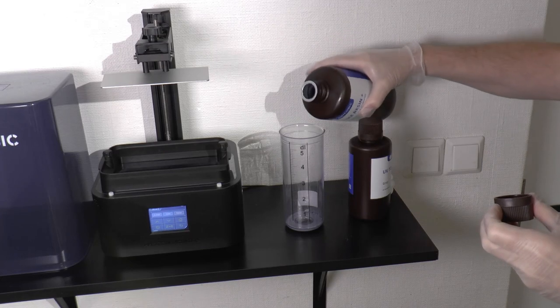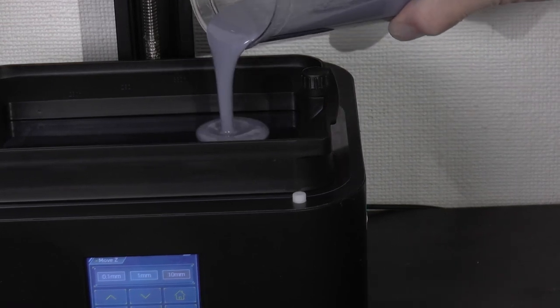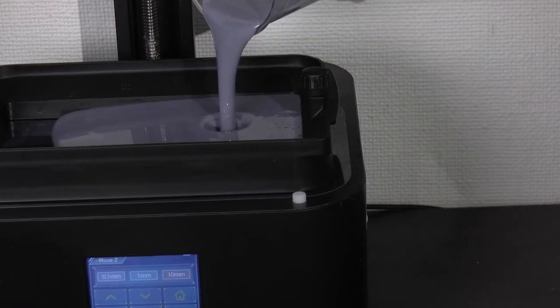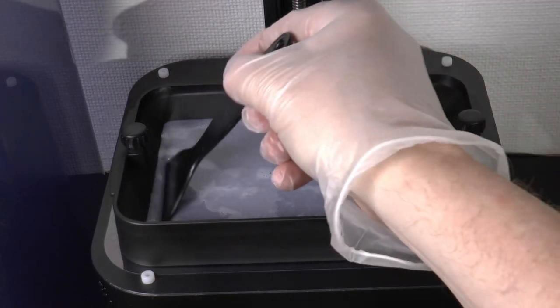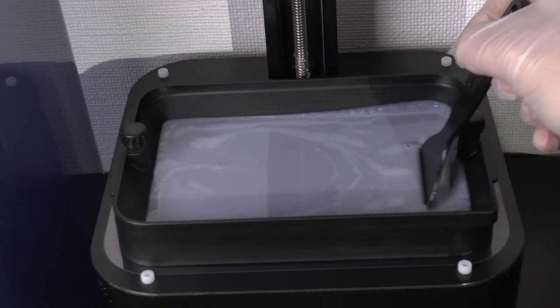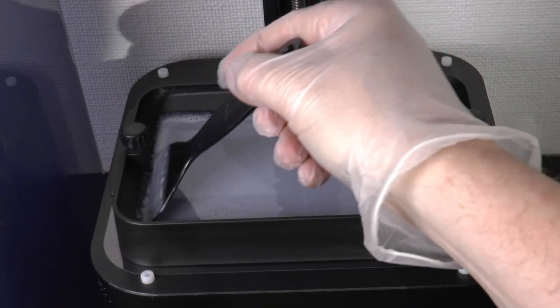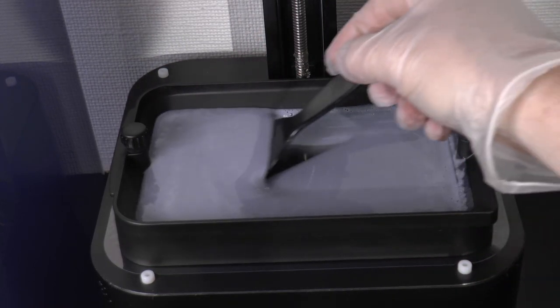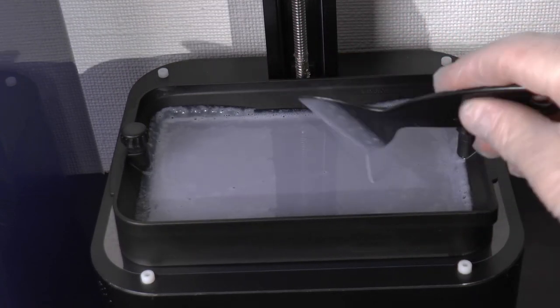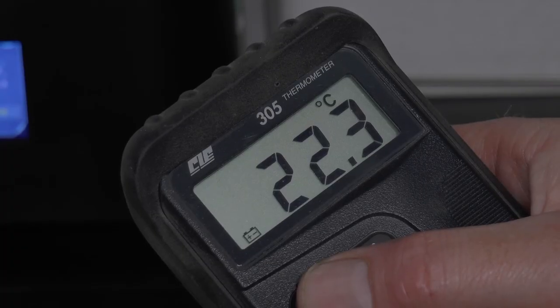For best results, it's always advisable to mix resins. And here I'm mixing 30 percent Anycubic UV Tough Resin, which is a flexible resin, with ABS-like Plus, which is a hard resin. Now when you mix the resin by shaking the bottle or whatever your method is, it will create thousands of air bubbles inside the resin and they need to go away before you start your printer. Otherwise, it will most likely lead to print failure. So we're leaving this for a few minutes, about half an hour.